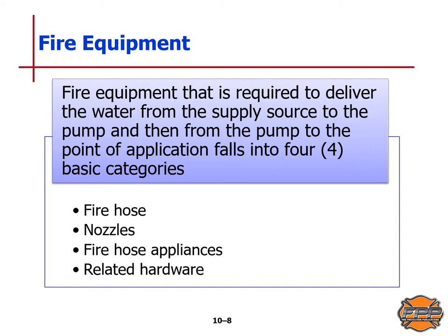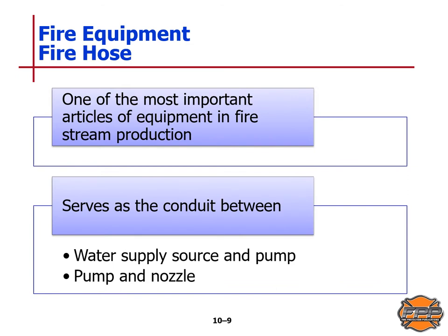Fire equipment required to deliver water from the supply source to the pump, and then from the pump to the point of application, falls into four basic categories: fire hose, fire nozzles, fire hose appliances, and other related hardware. One of the most important articles of equipment in fire stream production is fire hose, which serves as the conduit between the water supply source and the pump. The pump and nozzle deliver the water stream under pressure.